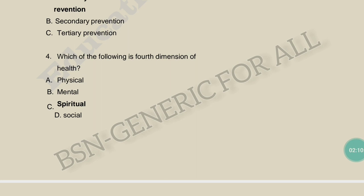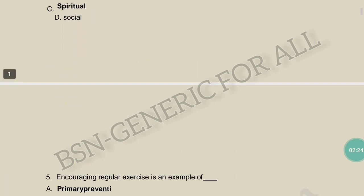Which of the following are the four dimensions of health? The four dimensions are: physical, mental, social, and spiritual. Physical health, mental health, social health, and spiritual health — these are the four dimensions. So the correct answer includes all four: physical, mental, social, and spiritual.